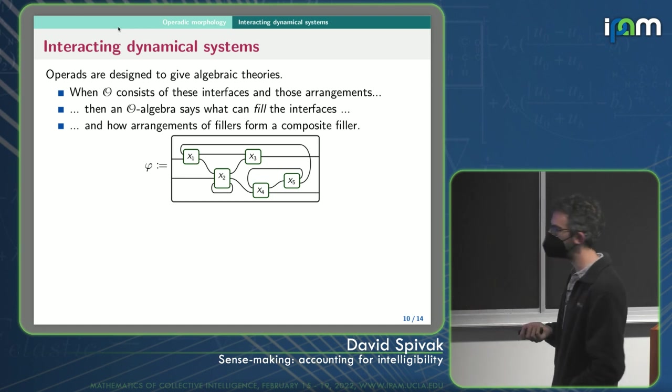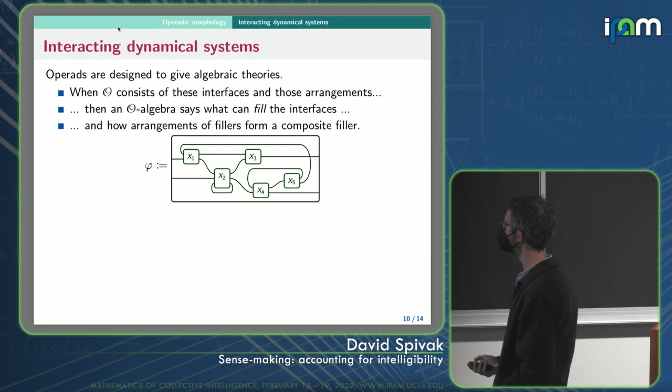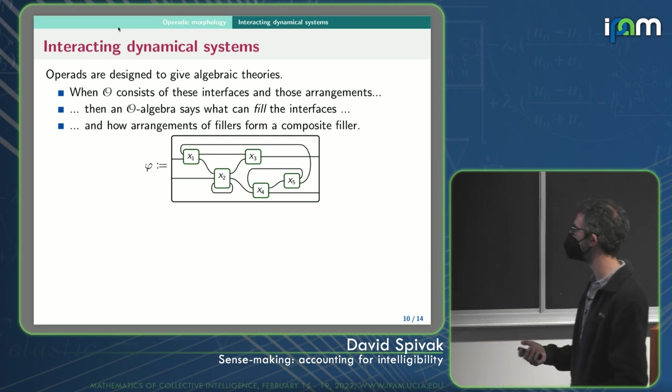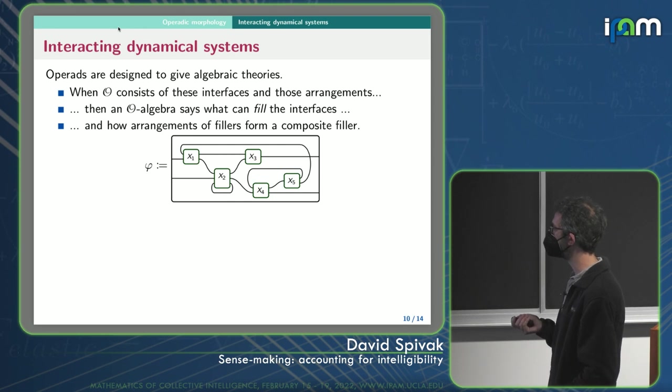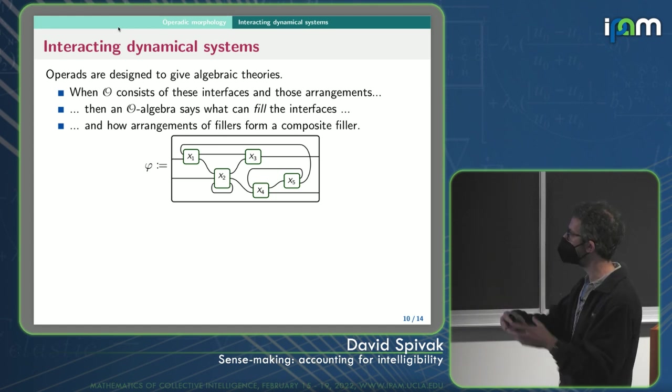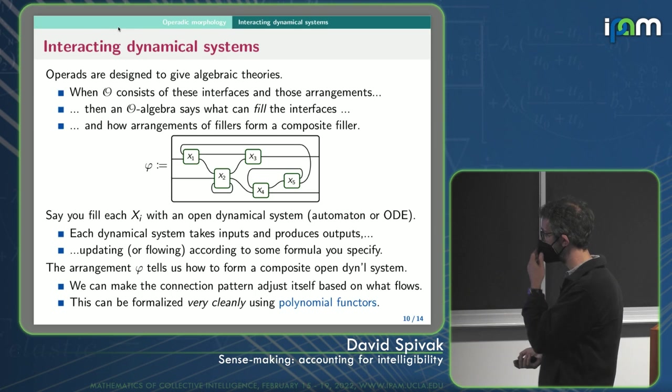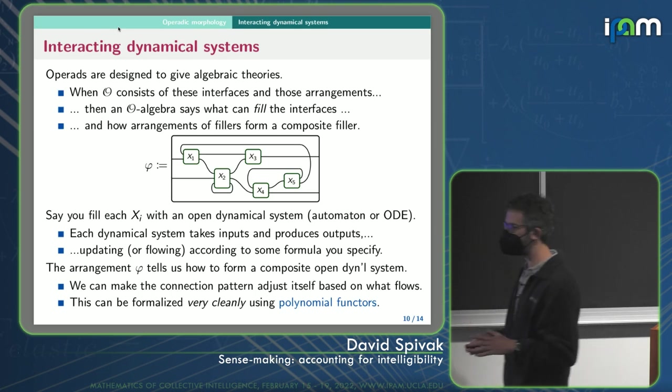But now we can say inside of each box, X1, X2, X3, I'm going to put a blah, a tensor, I'm going to put a dynamical system, I'm going to put a continuous, hybrid, discrete dynamical system, whatever you want. And all the operad is supposed to do is tell you how to put these things, how they can be put together. And the algebra says when you have an arrangement of fillers, what filler do you get?